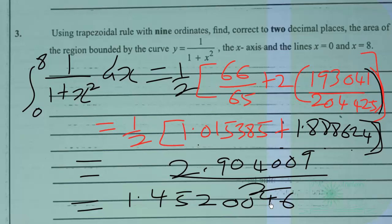So to two decimal places, we get 1.45. So using trapezoidal rule with nine ordinates, the integral is 1.45 from x equals 0 to x equals 8.